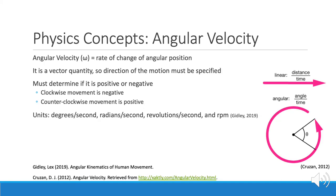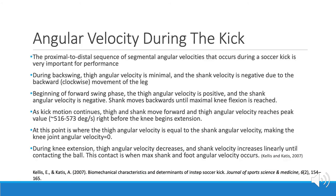The next concept is angular velocity, which is the rate of change of angular position. It is a vector quantity, so the direction of motion must be specified as positive or negative: clockwise motion is negative, and counterclockwise is positive. Angular velocity during the kick is very important for kick performance. During the backswing, the thigh's angular velocity is minimal, and the shank velocity of the lower leg is negative due to the backwards clockwise movement of the leg.